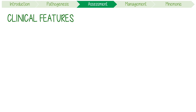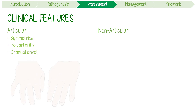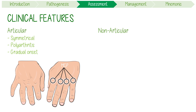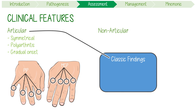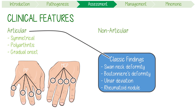Clinical features include articular and non-articular findings. It usually causes a symmetrical polyarthritis with a gradual onset affecting the hands' metacarpophalangeal joints and proximal interphalangeal joints. Classic exam findings include a swan neck deformity, Boutonnière deformity, ulnar deviation and rheumatic nodules.